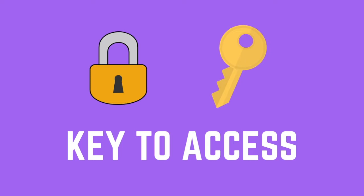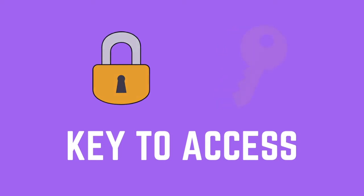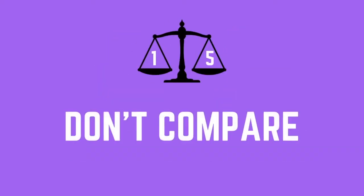You may wonder how your senior engineer can write code without reading the documentation. That's because of their experience. So don't compare your experience with your senior member's experience. You may have six months, one year, or two years of experience, but your senior member may have more than five years. If they achieved it in two years, that means they are a hard-working person.